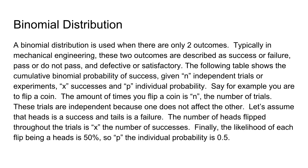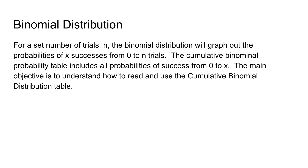For example, if you are to flip a coin, the number of times you flip the coin is n — the number of trials. These trials are independent because one does not affect the other. In our coin-flipping example, heads is a success and tails is a failure. The number of heads flipped throughout the trials is x, the number of successes. The likelihood of each flip being heads, or a success, is 50%, so p equals 0.5.